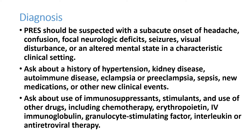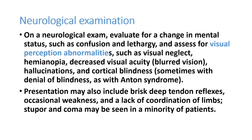On neurological examination, one of the most important findings we should not miss is visual perception abnormalities like visual neglect, hemianopia, reduced visual acuity, and hallucinations. Other visual findings include cortical blindness or denial of blindness — this is called Anton syndrome.